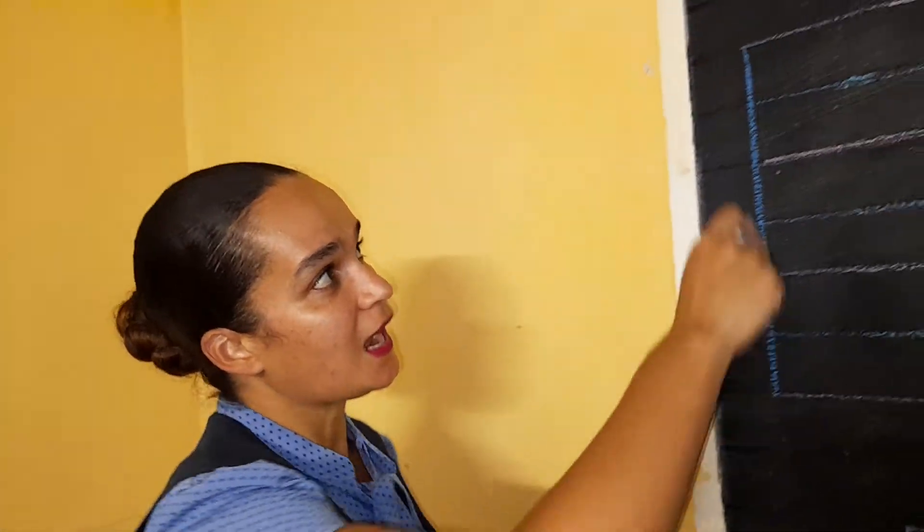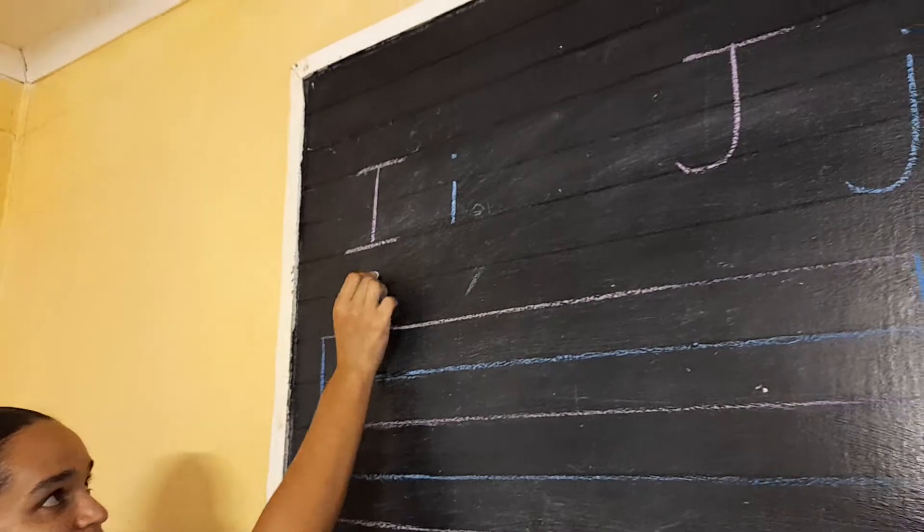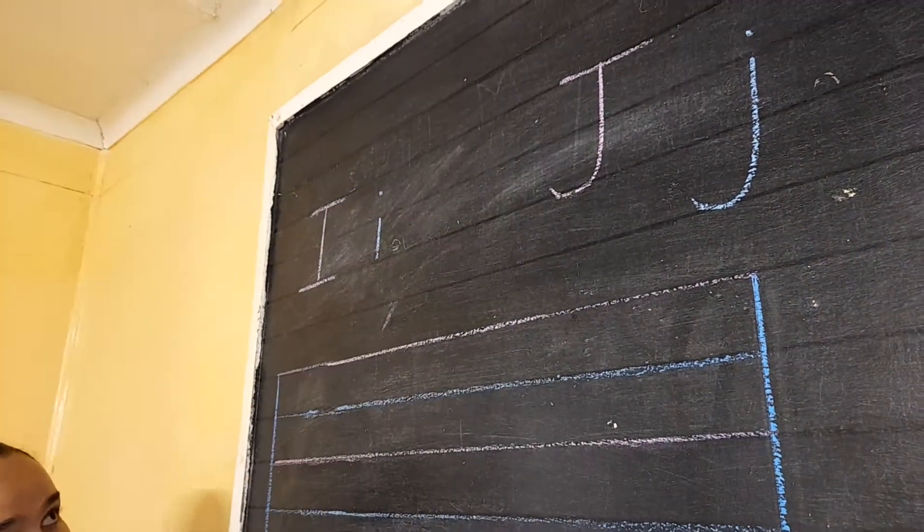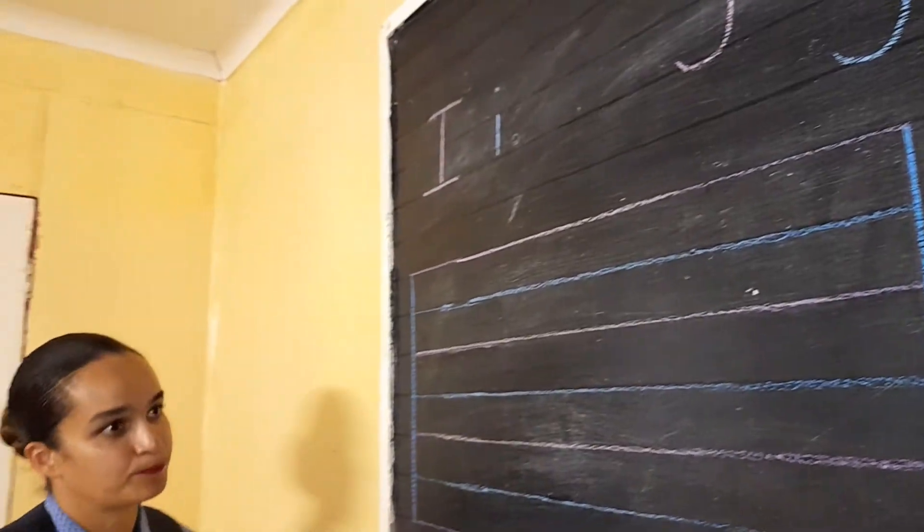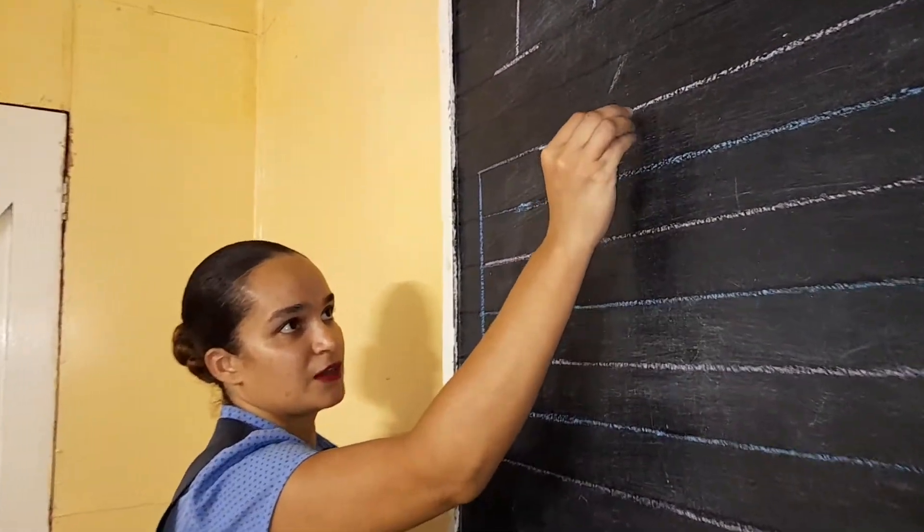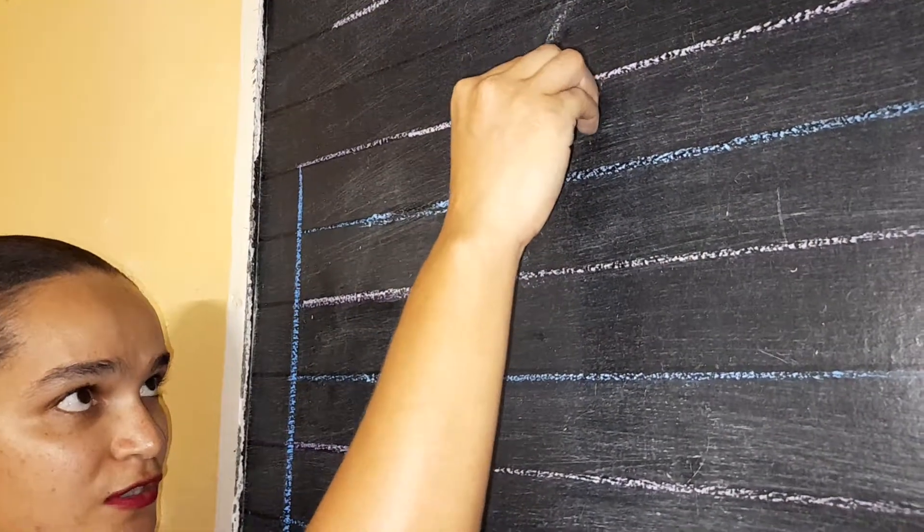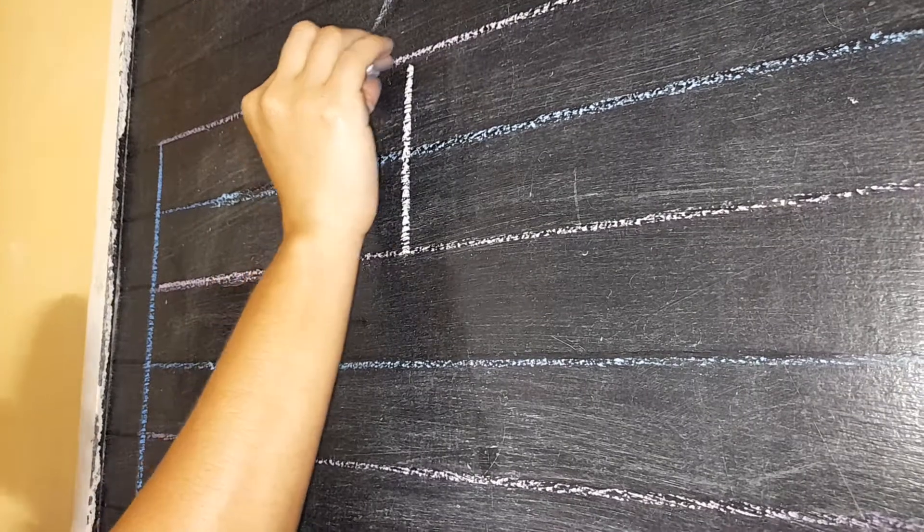We have big letter I and small letter I. We have big letter J and small letter J. How do we write big letter I? Very easy. You just draw a straight line down and then one going across and another at the bottom going across.